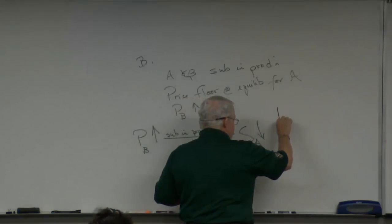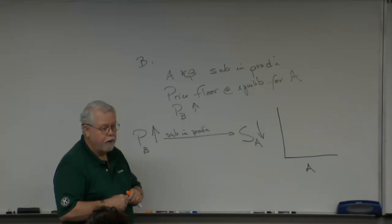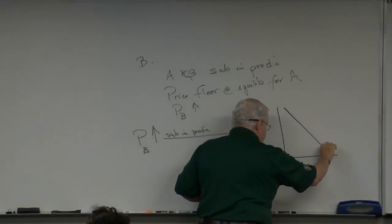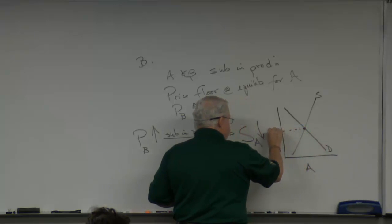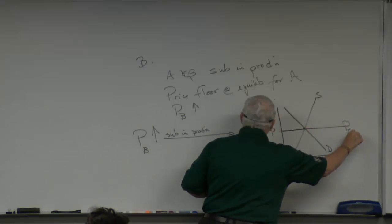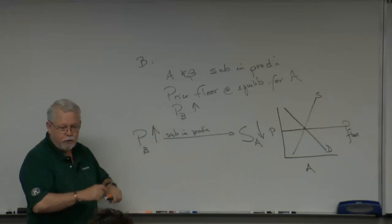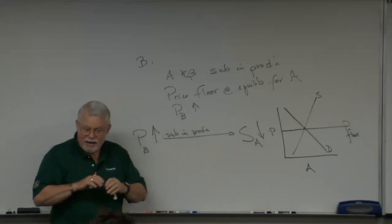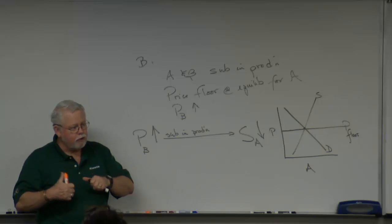We need to draw this out, and we're going to be talking about good A. At the initial equilibrium — supply and demand — there is a price floor. How is the price floor going to have an impact on this behavior? Since we know the supply of A, as a result of all of this, the supply of A is going to decrease. We don't use up or down — we say decrease. Decrease is always to the left.